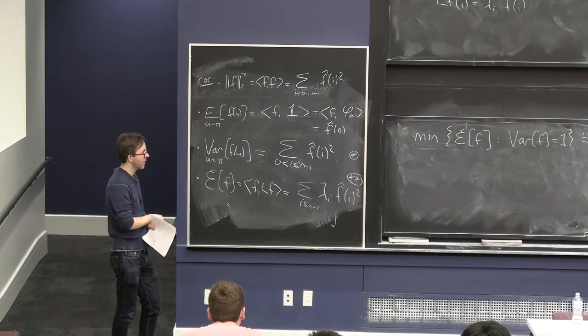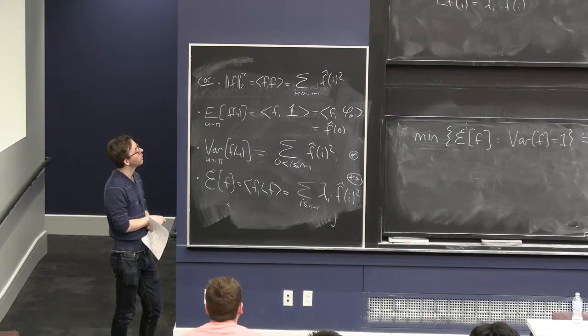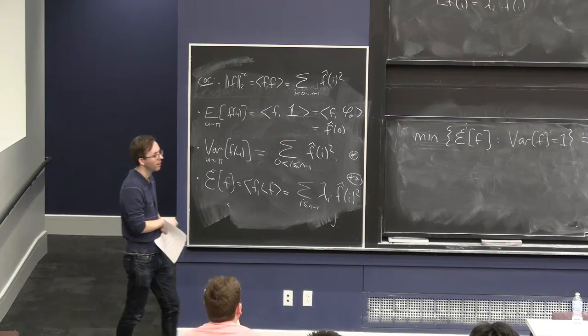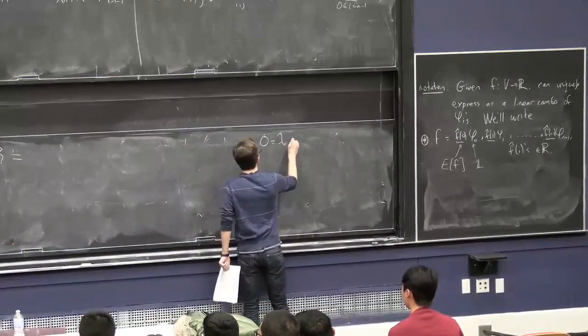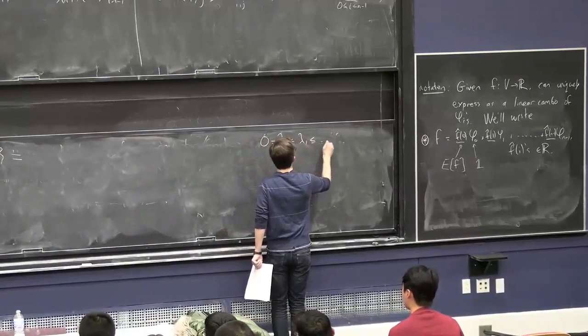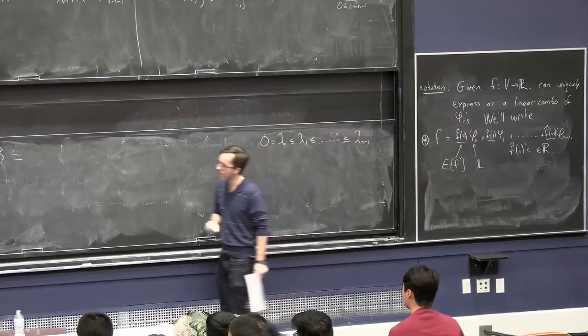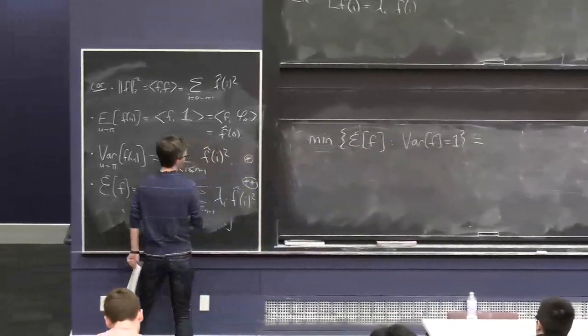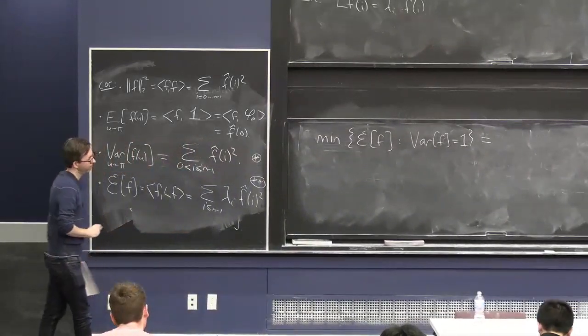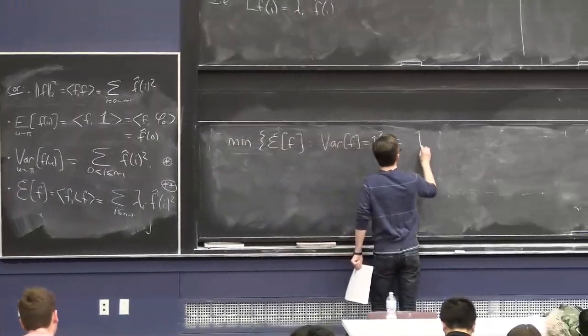That's right. Which is the smallest lambda? Maybe no longer up there. It's lambda, yeah, maybe I'll add this fact that was on a previous board. This is how we named our lambdas. But yeah, it's the smallest lambda other than the lambda 0, which is always 0, which is, by our convention, lambda 1.